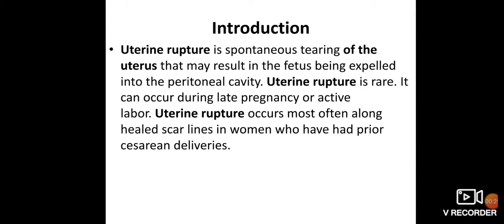Uterine rupture is a spontaneous, sudden tearing of the uterus, where the fetus is expelled into the peritoneal cavity. This is not in every patient — it is rare, occurring mostly in late pregnancy or active labor. The chances are higher in women who have already had two cesarean sections.